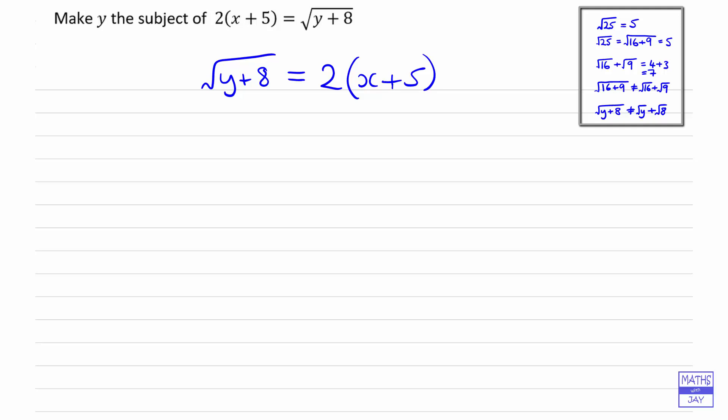We know we can't separate out the square root—we can't write this as root y plus root 8—but what we can do is square both sides.